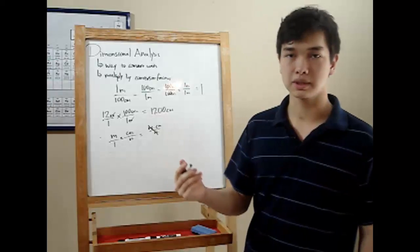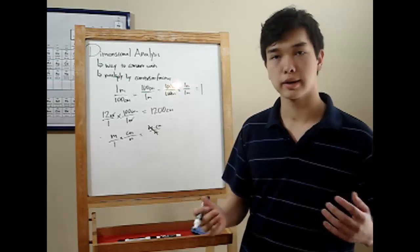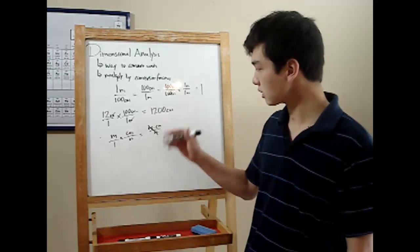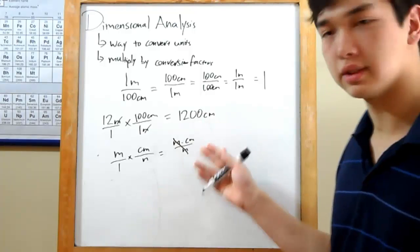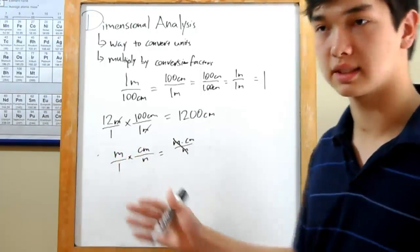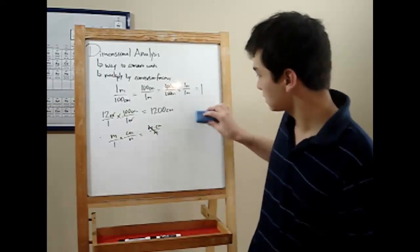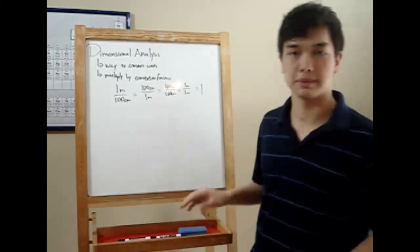You could cross multiply, but when you get into larger conversions that could span 3 or even 4 fractions, it'll be easier just to cross the units off. Notice that our distance hasn't changed at all. 1,200 centimeters is the same as 12 meters. All we did was multiply by 1 and change our units. Okay, so that was a pretty simple conversion. Let me show you something a little more abstract.